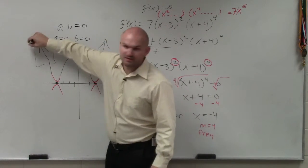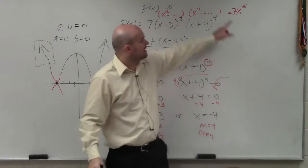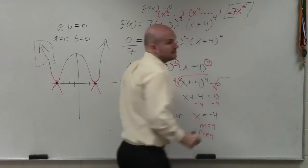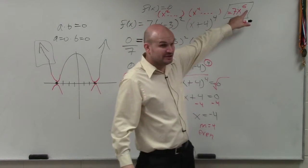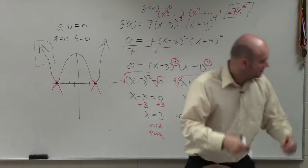All right, first of all, do you understand why I wrote that arrow there? You can say no. The end behavior. If you were to multiply this polynomial out, you would have this. When you have an even degree, if you guys remember, go back to your notes. Remember, end behavior.